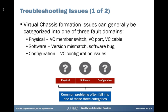Physical issues could involve a virtual chassis member switch that's misbehaving or failing, the virtual chassis port on the member switch, or the virtual chassis cable that interconnects member switches within a VC. Software issues could include a version mismatch or software bugs, which do exist and pop up from time to time. Configuration issues can arise if you're working with a pre-provisioned deployment where the configuration is not complete or accurate.